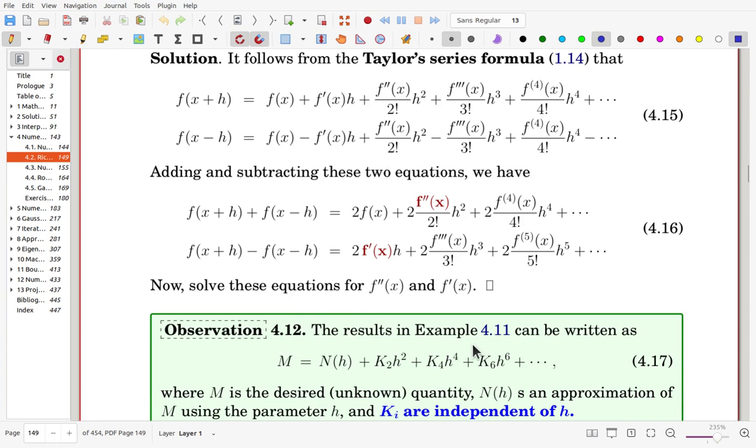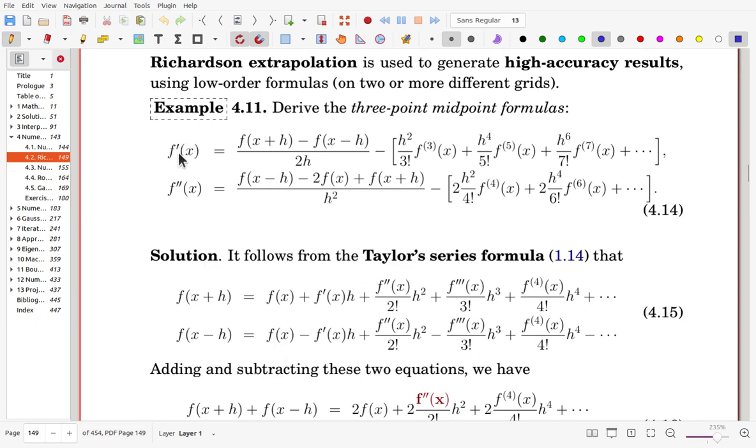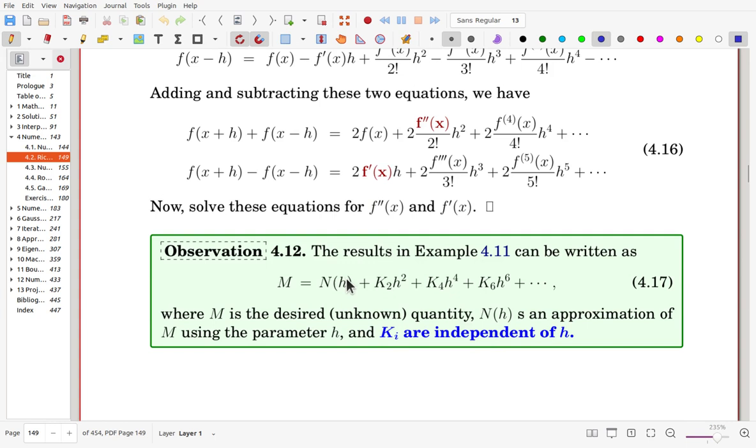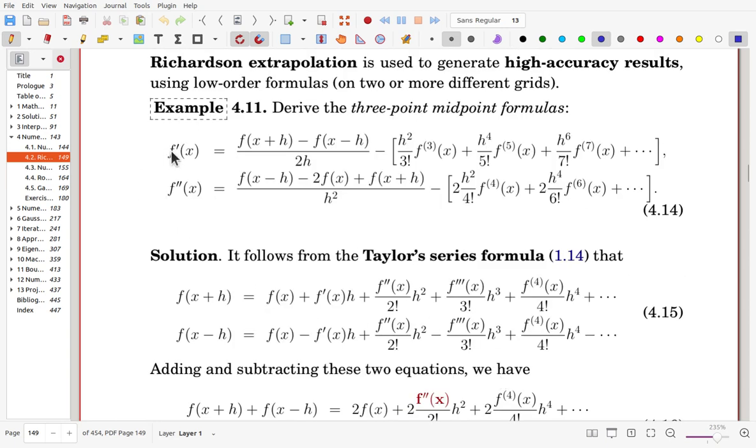The result in example 4.11 can be written in this way. M is the desired quantity. Now we want to get these values, and this is approximation. Using this midpoint formula, and the parameter is h, so that here N(h) is an approximation of M using the parameter h. Now the ki is independent of h, here is evaluated at x.